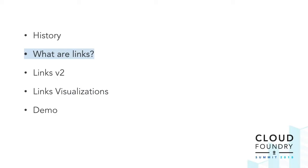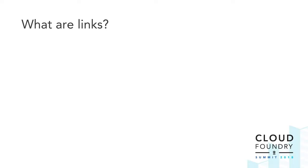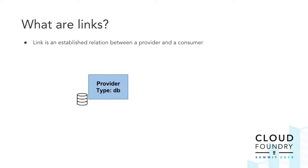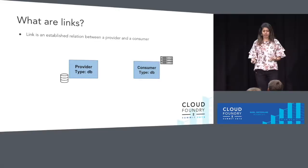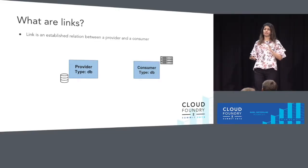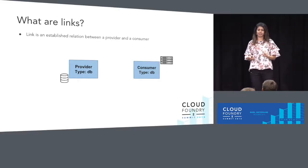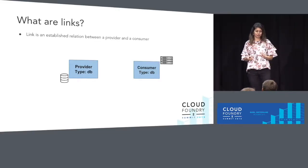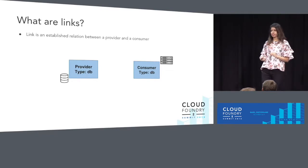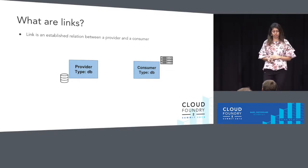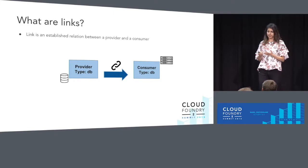But what is a link? Quite simply, a link is a connection between two components — a provider and a consumer. A provider and consumer both define the type of link that they are consuming, and Bosch, at runtime, resolves the connection between the two, creating a link.